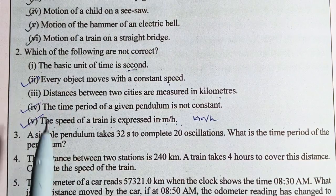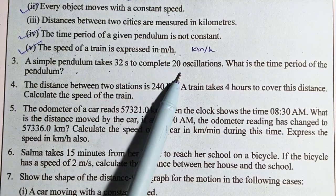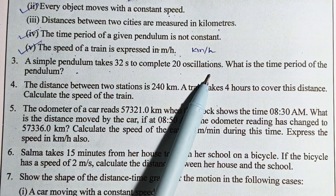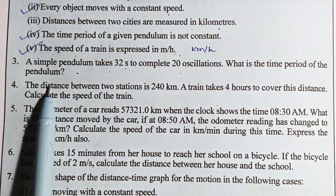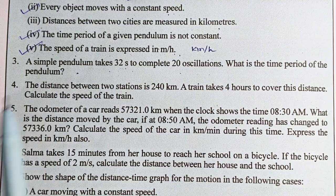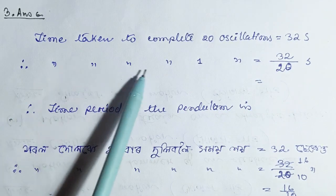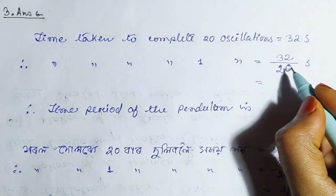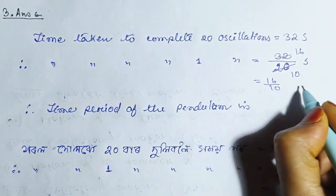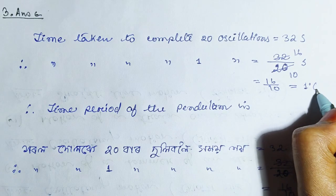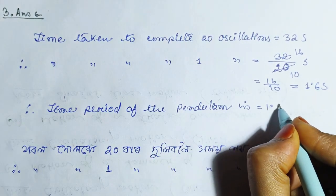Question number 3: a simple pendulum takes 32 seconds to complete 20 oscillations. What is the time period of the pendulum? The answer: time taken to complete 20 oscillations equals 32 seconds. Therefore, time taken to complete 1 oscillation equals 32 divided by 20 seconds, which equals 1.6 seconds.